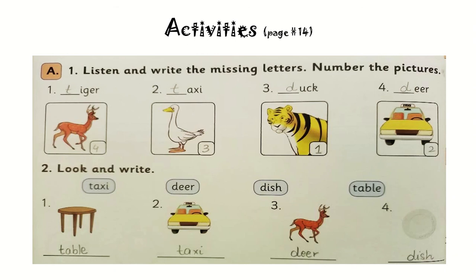First of all you have to complete the words. This is the solved exercise for you. You can see the first one is 'tiger' — you have to find the picture and write the missing letters in. In the next activity, 'look and write,' you have to write the exact name of the thing shown in the picture.